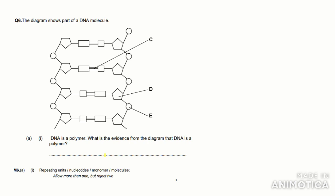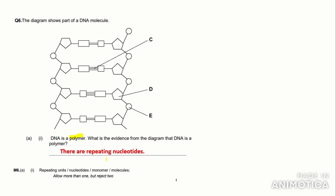The diagram shows part of a DNA molecule. DNA is a polymer — what evidence from the diagram shows this? Polymers are made up of many repeating monomer units, so we write that there are repeating nucleotides. The mark scheme accepts repeating units, nucleotides, monomers, or molecules. They reject 'two,' because two nucleotides form a dinucleotide, not a polynucleotide.